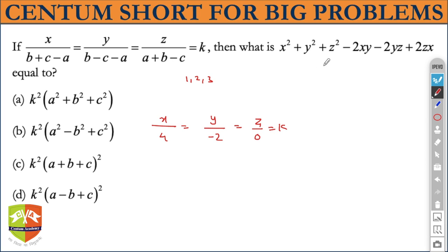So what is the value of x? X became 4k, square gives 16k². Y became minus 2k, square gives 4k². Z became 0.